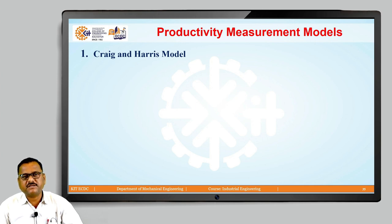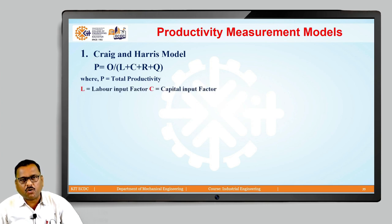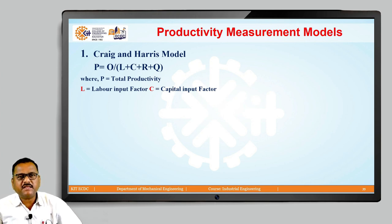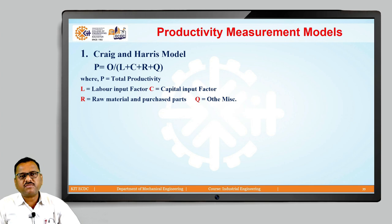The Craig and Harris model gives us productivity as output divided by (L + C + R + Q). Here, P is the total output. L is the labor input factor, C is the capital input factor, R is the raw material and purchased parts, and Q is the other miscellaneous inputs used to generate that output. So the Craig and Harris model focuses on total productivity as total output divided by the summation of labor, capital, raw material, and other miscellaneous inputs.